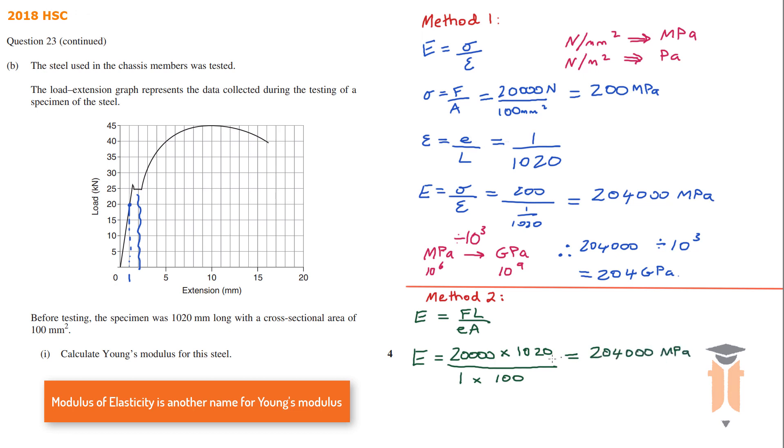Don't forget we're dealing here with newtons and millimeters squared and millimeters, so we're going to get our answer in megapascals. Then converting this again to gigapascals, we just divide this by a thousand. And we get Young's modulus to be 204 gigapascals.